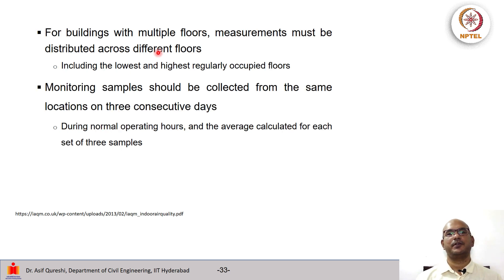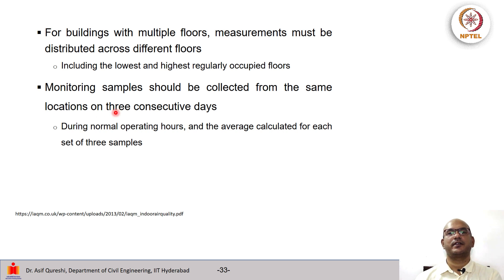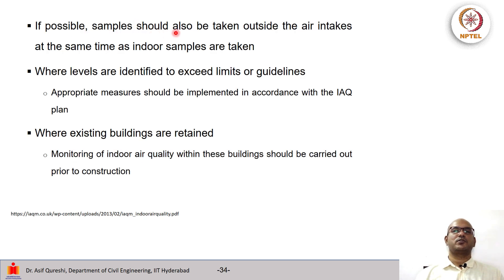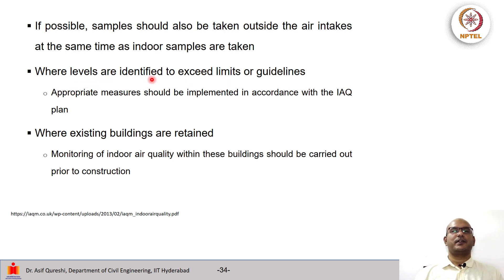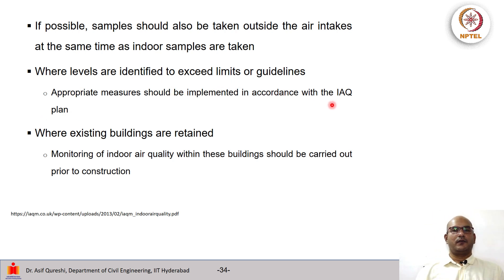For buildings with multiple floors, measurements must be distributed across different floors, including the lowest and highest regularly occupied floors. Monitoring samples should be collected from the same locations on 3 consecutive days during normal operating hours and the average calculated for each set of 3 samples. If possible, samples should also be taken outside the air intakes at the same time as indoor samples, so that one can match the indoor to outdoor relation. Where levels are identified to exceed limits or guidelines, appropriate measures should be implemented in accordance with the IAQ plan. Where existing buildings are retained, monitoring of indoor air quality should be carried out before construction starts.